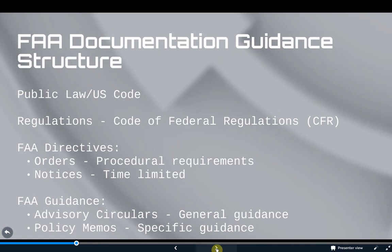Notices allow the FAA to get information out quickly and then provide some time to determine if that information should be a permanent change or if a different solution is needed. Sometimes regulatory requirements and even FAA orders aren't clear for industry, so the FAA publishes advisory circulars (ACs), which clarify or guide people on what they are looking for. The ODA is also required to meet information presented in ACs. And finally, some situations don't fit orders or ACs, so the FAA also publishes policy memos further defining their expectations. These are also expected to be followed by the ODA when they are relevant.